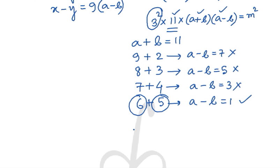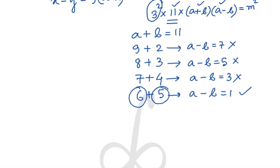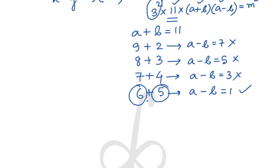So now after getting the value of a and b to be 6 and 5. Now let us quickly substitute the value of 6 and 5 in this equation. So we can say that the equation will become 99 × (6 + 5) × (6 - 5). So that will be coming out to be m².